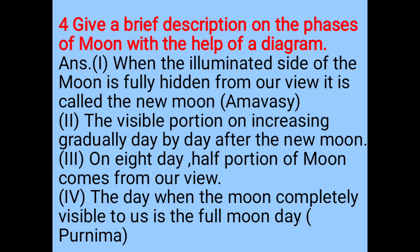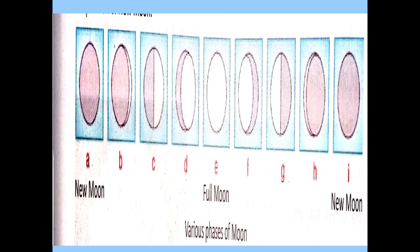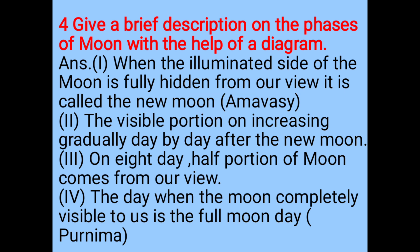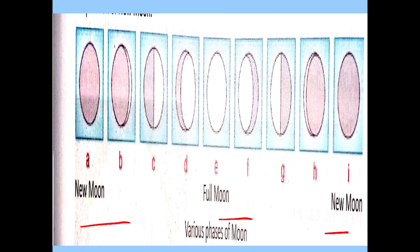Give a brief description of the phases of the moon with the help of a diagram. When the illuminated side of the moon is fully hidden from our view, it is called new moon. The visible portion increases gradually day by day after new moon. On the 8th day, half the moon is visible. On full moon day, called Purnima, the moon is completely visible. This cycle of new moon to full moon continues.